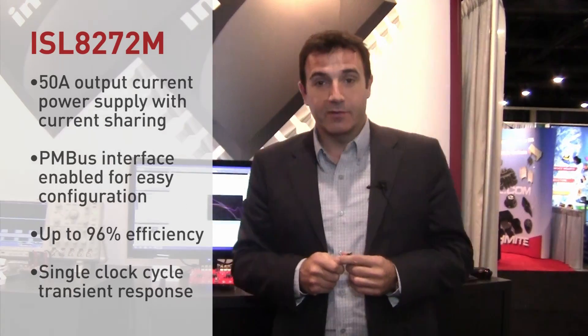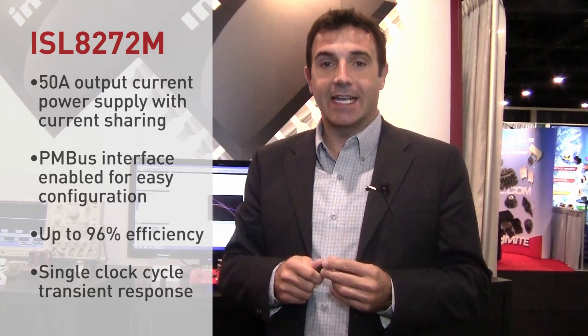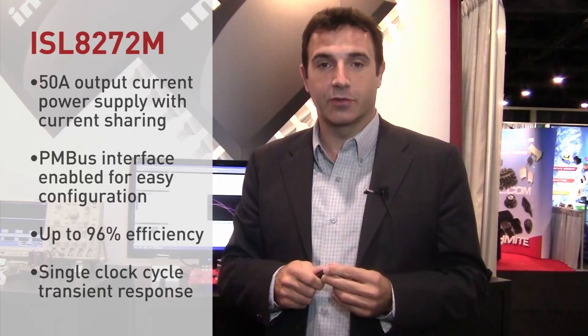Powered from a 5 or 12 volt standard power rail, the ISL8272M can achieve efficiencies as high as 96% on most conversion ratios.